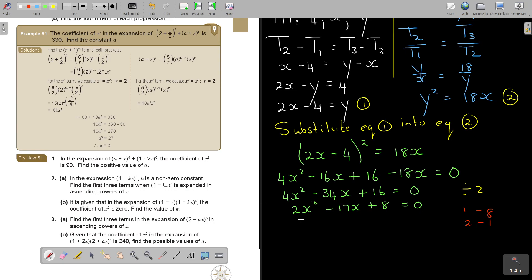And I'm basically going to get x minus 8, 2x minus 1 equals to 0. So therefore, x is 8, or x is a half.